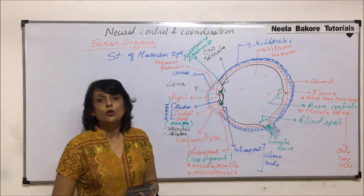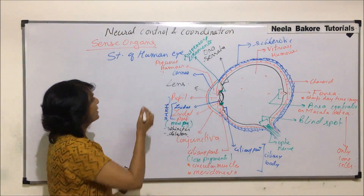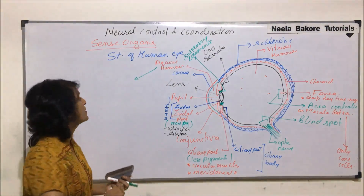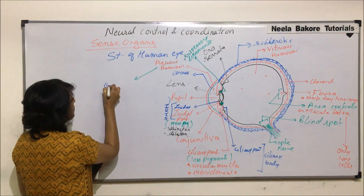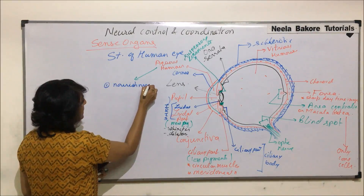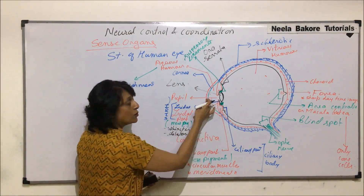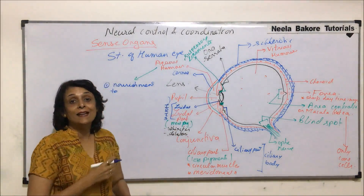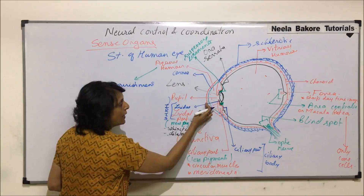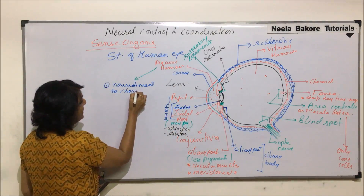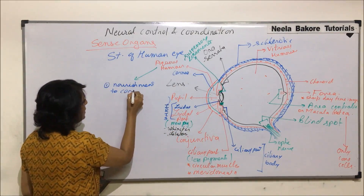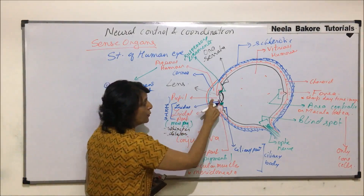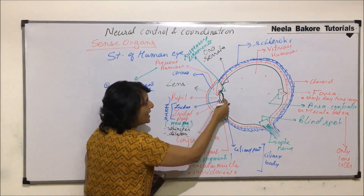We have already labeled two liquids in the anterior and posterior compartments. The first liquid is aqueous humor, which performs certain functions. It provides nourishment to two structures: the cornea — which receives nourishment from both aqueous humor and lacrimal secretion or tears — and also to the lens.